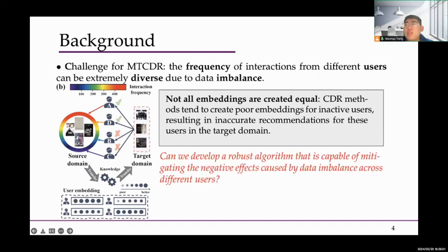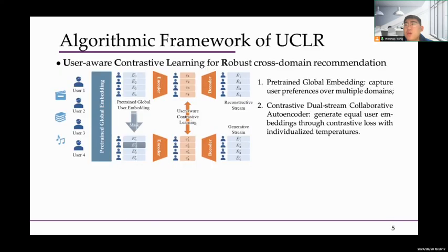Hence, can we develop a robust algorithm that is capable of mitigating the negative effects caused by data imbalance across different users? In this paper, we propose user-aware contrastive learning for robust CDR. Our proposed algorithm consists of two sub-modules, including pre-trained global embedding and contrastive dual-stream collaborative autoencoder.